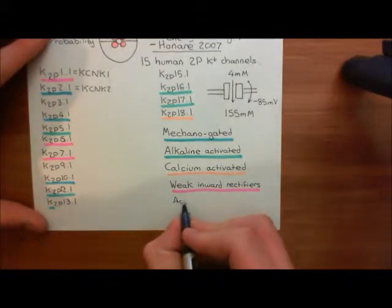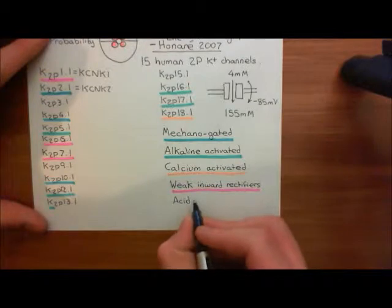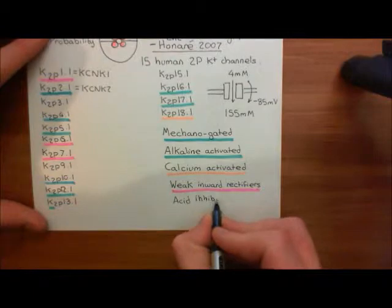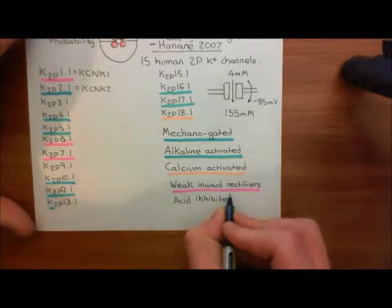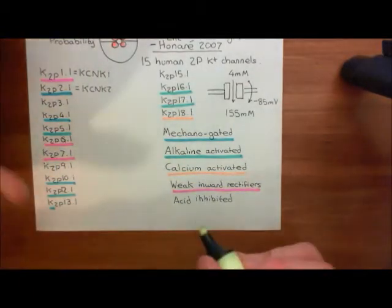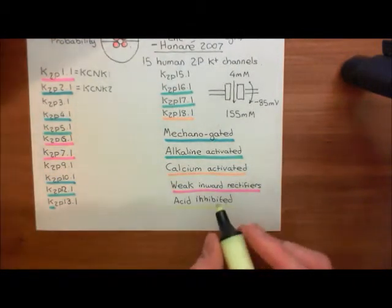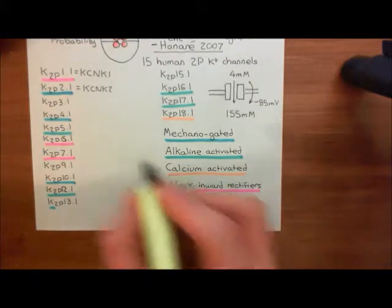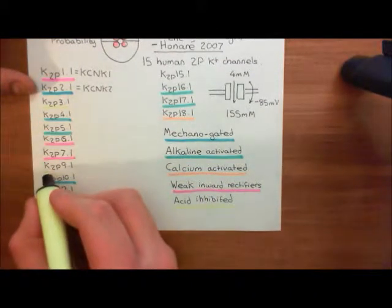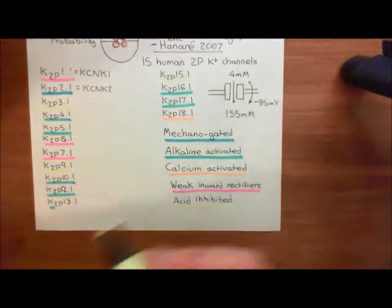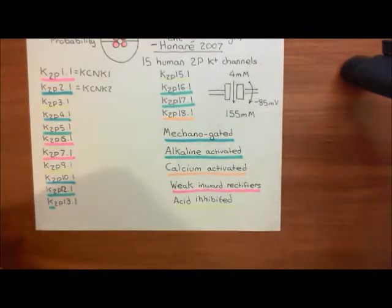There are also two pore-domain potassium channel subunits which are acid-inhibited - these will be closed by too high a proton concentration. We'll highlight these ones in yellow. These are the K2P3.1 subunits, the K2P9.1 subunits, and also the K2P15.1 subunits. All of those are inhibited by too high an acid concentration.